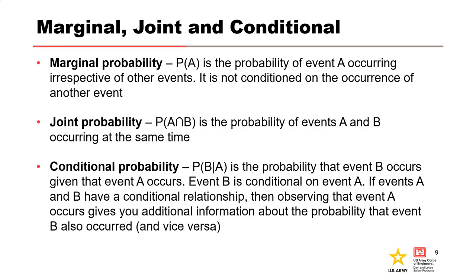Joint probability is the probability of one or more events occurring at the same time. Conditional probability is the probability of one event occurring with some relationship to one or more other events. Conditional probabilities are something we deal with quite often when working with event trees. The nomenclature for conditional events uses a vertical line — sometimes called a pipe — that separates the variable and can be read as 'given that' or 'conditional on.' So the probability of B given that A occurs means B is conditional on A. Observing that A occurs gives you additional information about the probability that B also occurred, and vice versa.